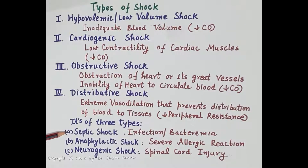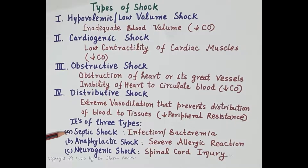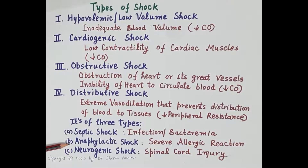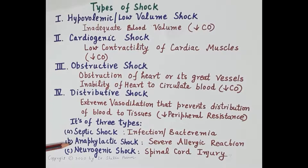Septic shock is also termed sepsis or blood poisoning. It is caused primarily due to infection by gram-negative bacteria. Endotoxins are released by the bacteria into the blood. These endotoxins are processed and chemical mediators are produced, which results in vasodilation, and that results in ischemia.